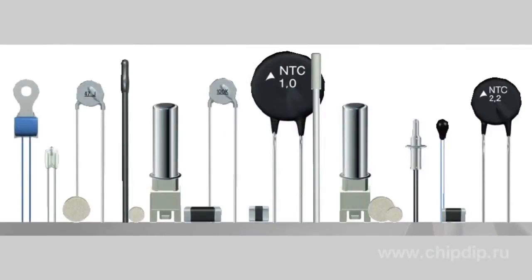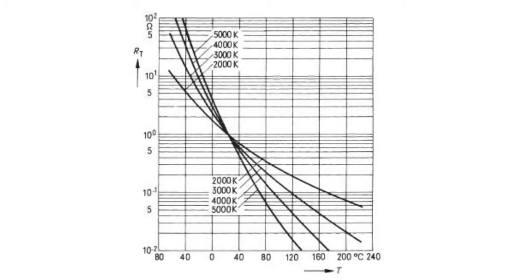Special attention is usually given to the more popular thermistors with a negative temperature coefficient, which are also widely spread in modern electronics. These resistors are highly sensitive, narrow-range, non-linear devices, the resistance of which decreases when the temperature goes up.